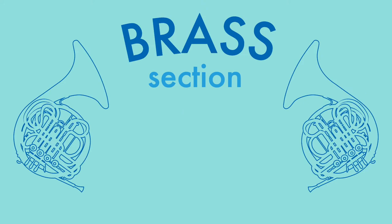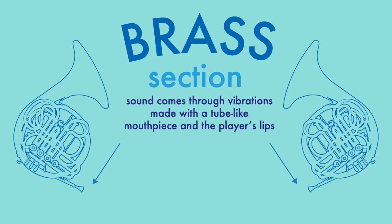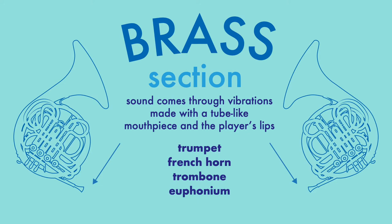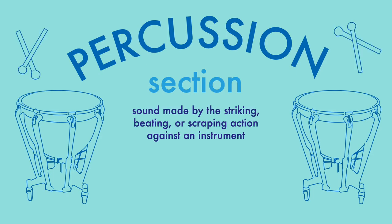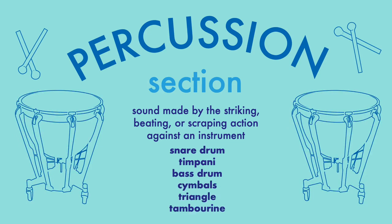We can't forget our brass section. This section is made up of instruments where the sound comes through vibrations made with a tube-like mouthpiece and the player's lips, and this includes instruments like the trumpet, the French horn, the trombone, the euphonium, and the tuba. And last but not least, we have the percussion section, which includes all instruments where the sound is made by the striking, beating, or scraping action against the instrument, and this includes classic instruments like the snare drum, the timpani, the bass drum, cymbals, the triangle, and the tambourine.